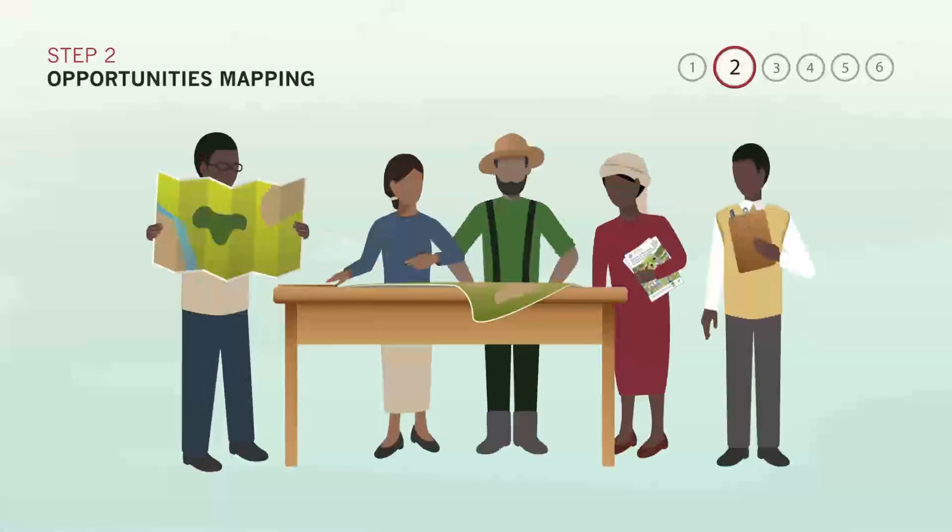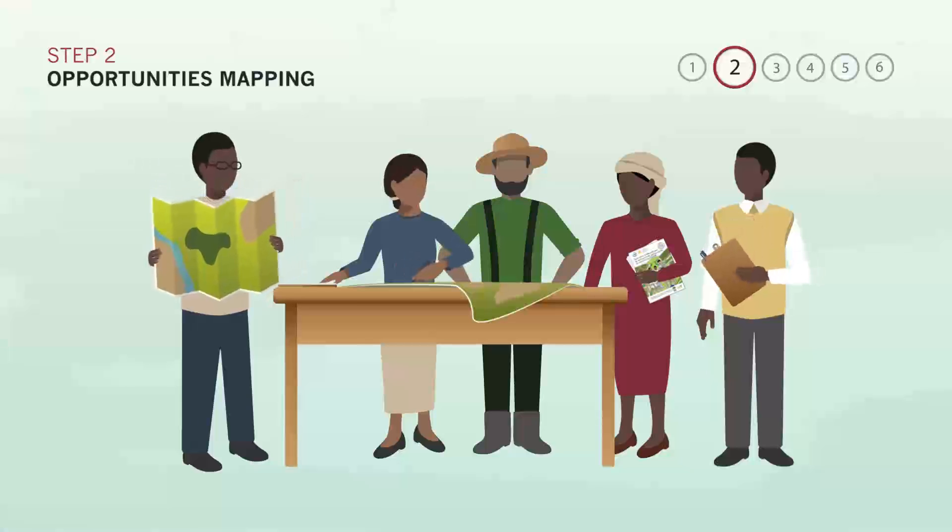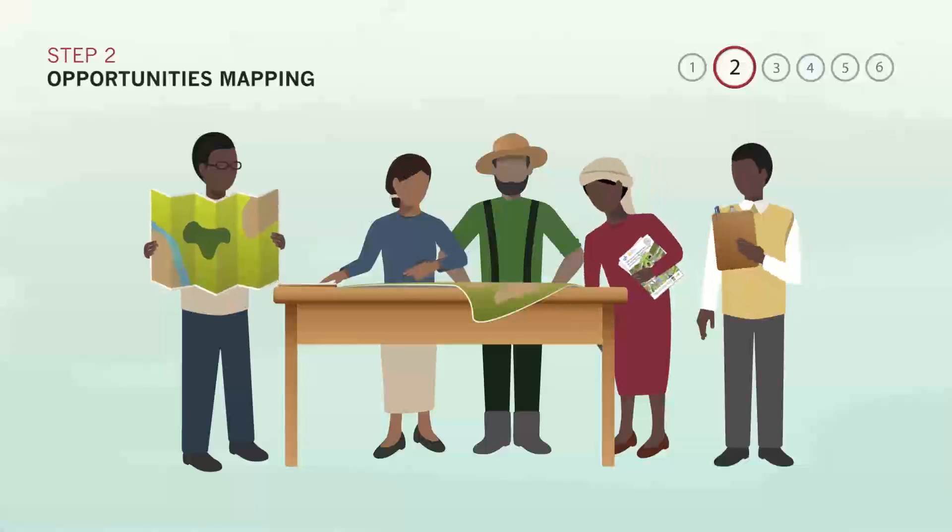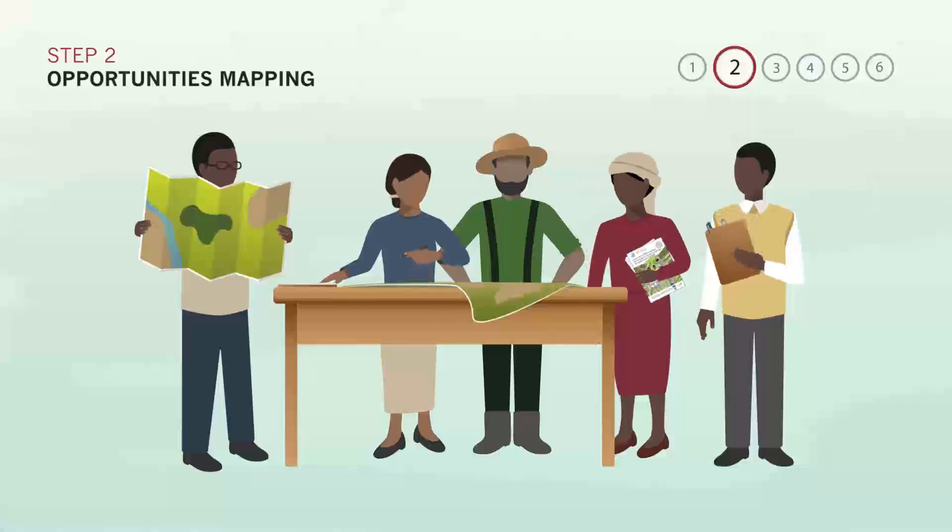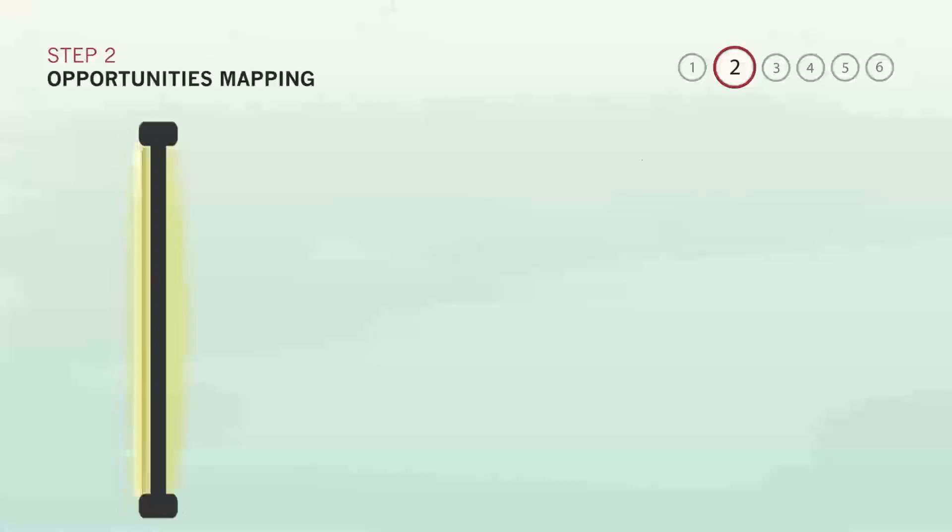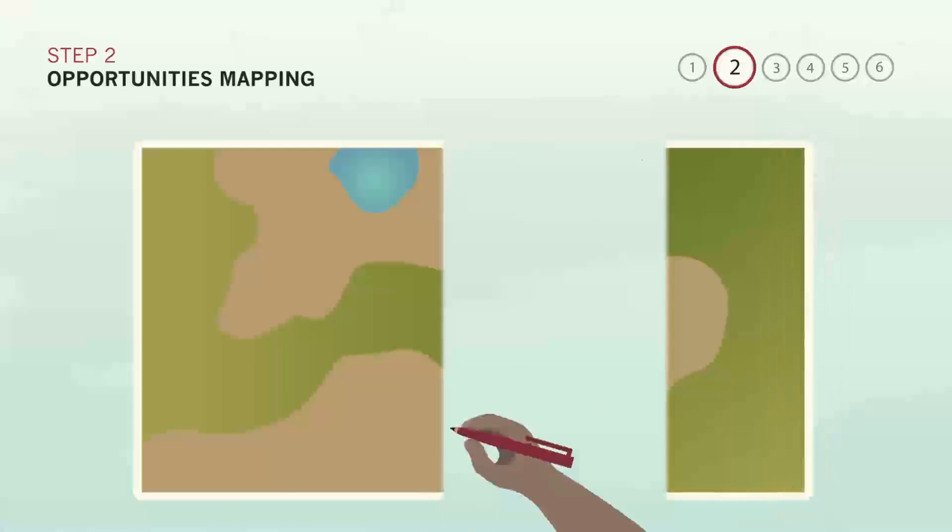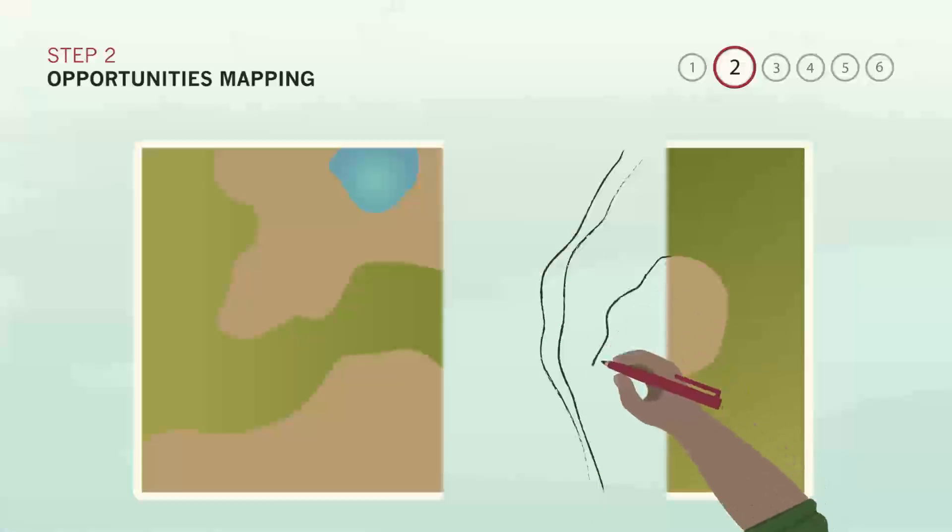Knowledge mapping, on the other hand, involves applying local knowledge to existing base maps to manually find areas suited for restoration. This option is very helpful in places where digital data is limited. In a typical knowledge mapping exercise, local stakeholders and experts take turns adding their knowledge to existing maps. This way, local knowledge on existing land uses, health of the land and its availability for restoration can be recorded.